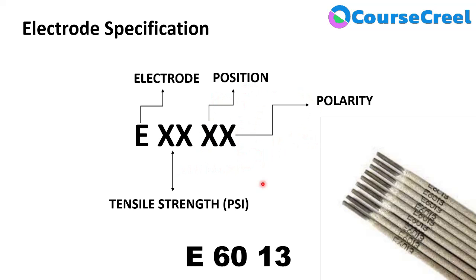For example, with code E7018: E represents electrode, 70 represents 70,000 PSI tensile strength, 1 represents all-position use, and 8 represents reverse polarity welding current. By reading this code we can identify what this electrode is useful for.